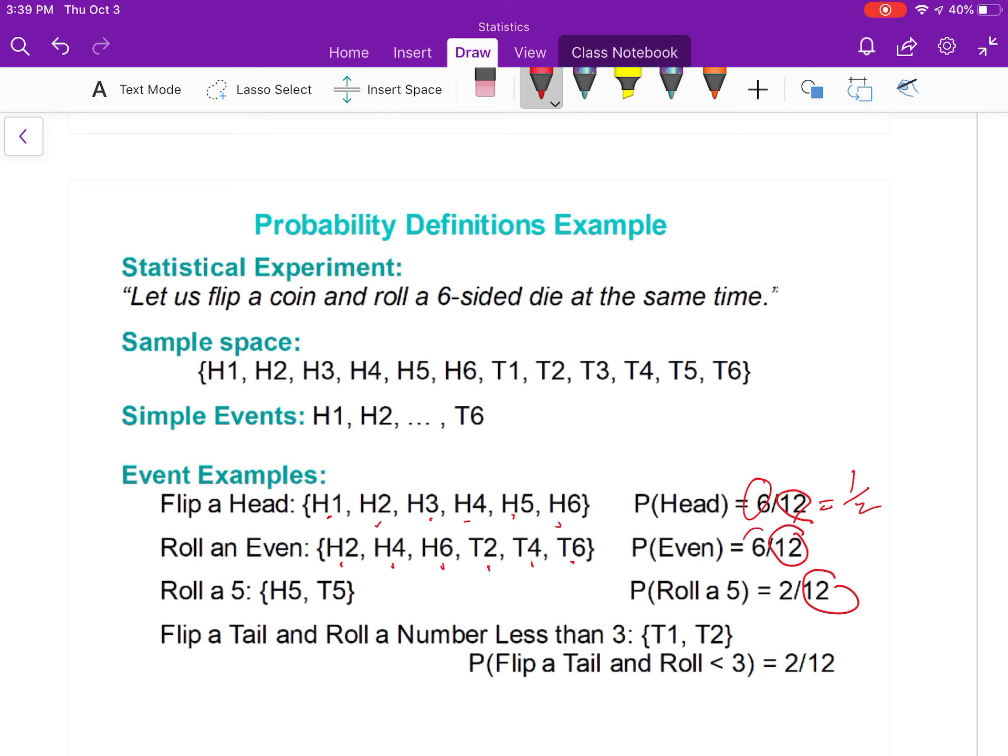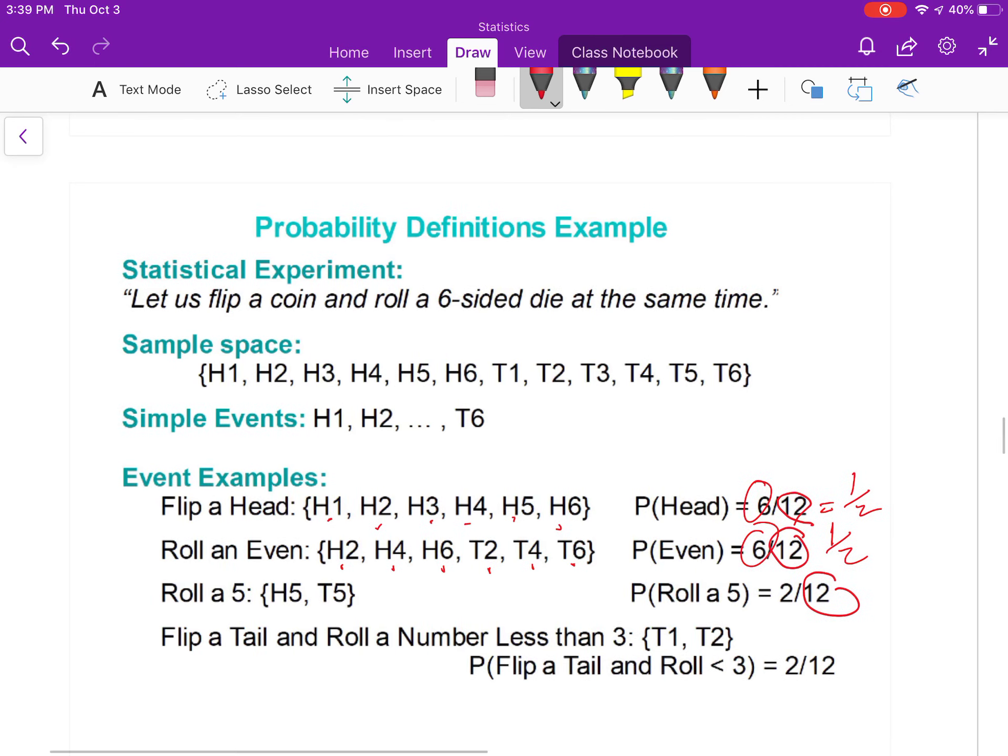Rolling a 5: there's either heads with 5 or tails with 5, so that's 2 out of 12, which is 1/6. Flipping a tail that's less than 3: here are my only possibilities for less than 3, so there's 2 out of 6 or 1/6.